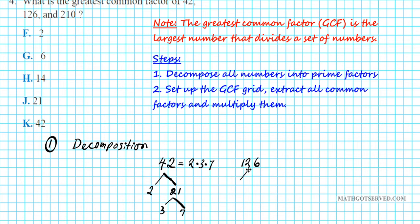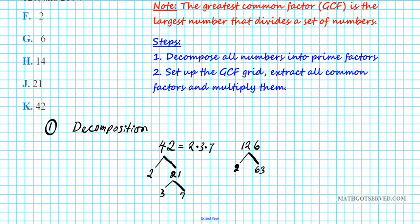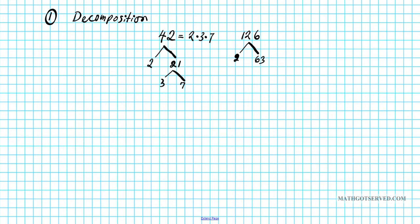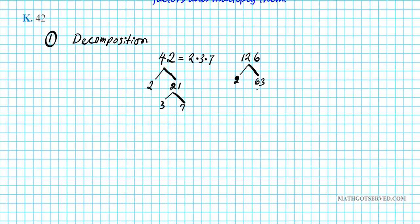126 is even, so 2 goes into it: 2 times 63. Adding the digits of 63 gives 9, and since 3 divides 9, 3 divides 63: 3 times 21. And 3 goes into 21 seven times. So the prime factor decomposition of 126 is 2 times 3 times 3 times 7.